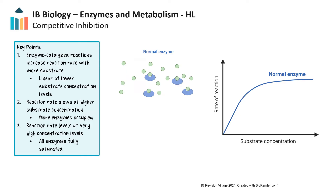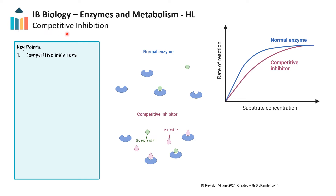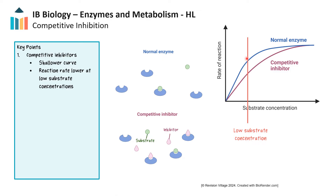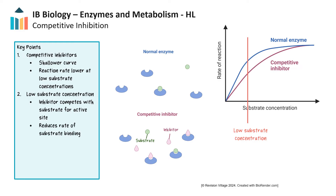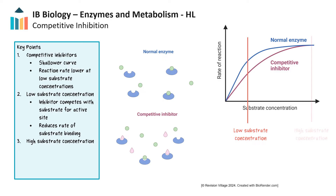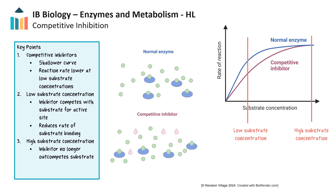The curve with a competitive inhibitor has a shallower initial slope, indicating that the reaction rate is slower at low substrate concentrations. This occurs because the inhibitor, indicated by pink, competes with the substrate for the enzyme's active sites, reducing the likelihood of substrate binding. At low substrate concentrations, pink inhibitors outcompete the green substrates, so the rate is lower than normal enzyme activity. As substrate concentration increases, the inhibitor no longer outcompetes the substrate for active sites, and the reaction rate eventually approaches the same rate as the normal curve. In summary, the competitive inhibitor curve shows a delayed rise in reaction rate compared to the normal curve, but both reach the same maximum rate at very high substrate concentrations.